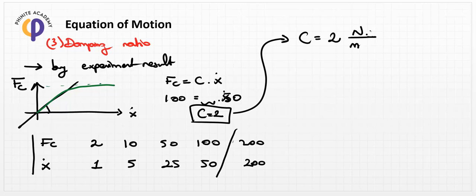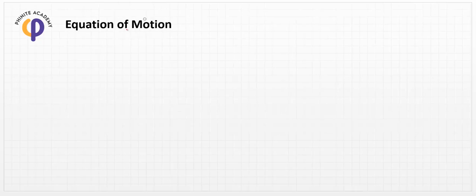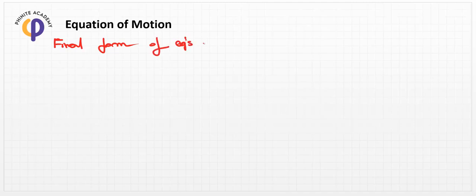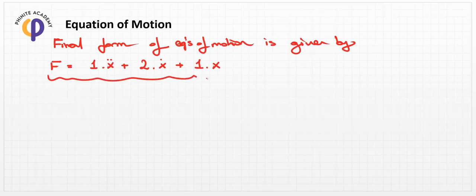Using these coefficients, we can create a generic equation of motion. The final form of the equation of motion is: F = 1·x-double-dot + 2·x-dot + 1·x. This is our general notation for this equation of motion.